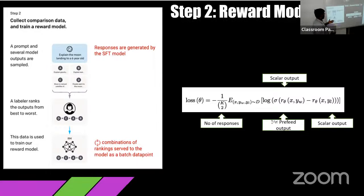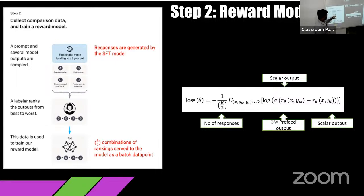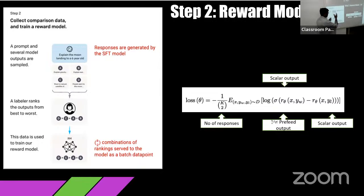Regarding the reward model formula — the SFT model was given the same question four times because ChatGPT responds differently to the same question every time. We have four options and the reward model takes K, which represents the number of responses — that is four — and takes the log of it. So the model does not get confused, we give one prompt and one response in a pair. In all four responses, we have one output which is the best, and that is the preferred output. It then changes the parameters accordingly.